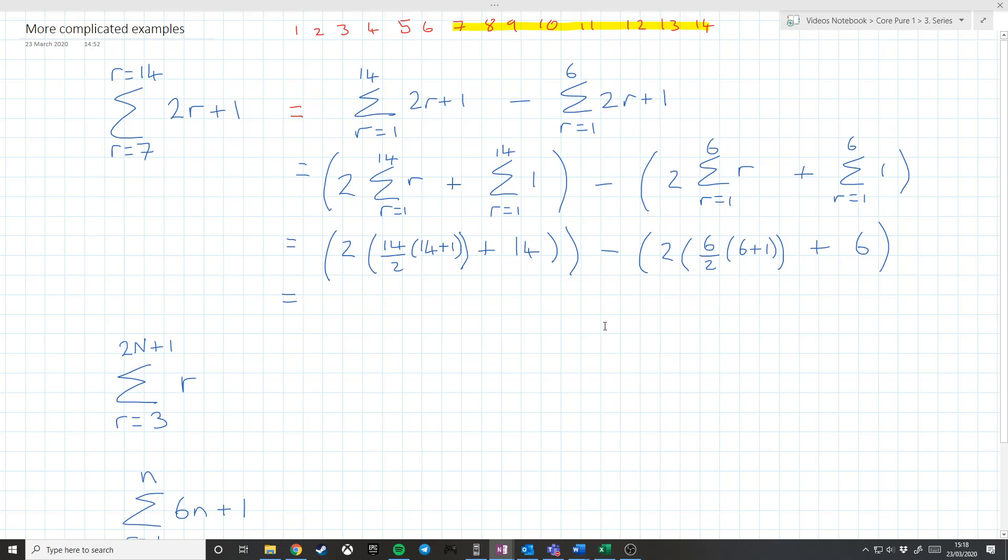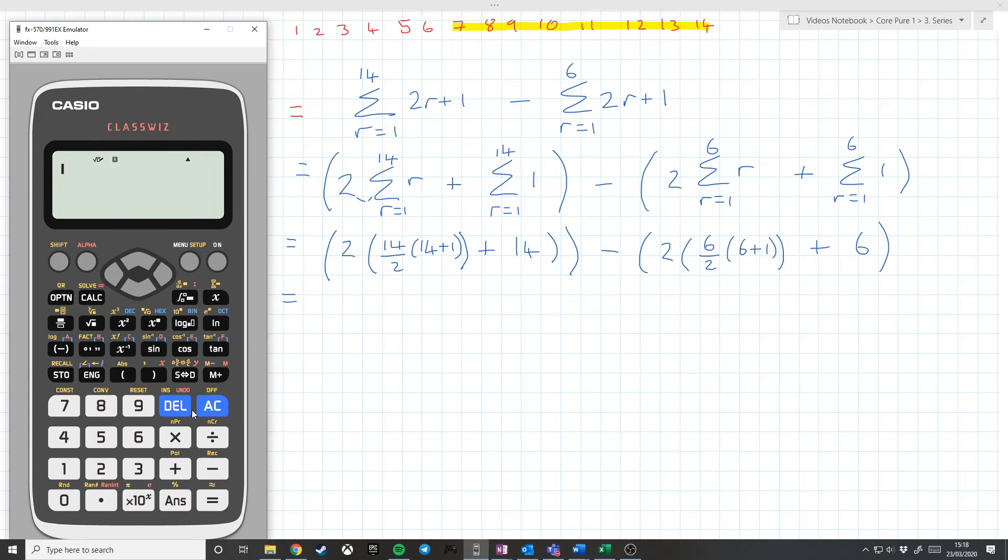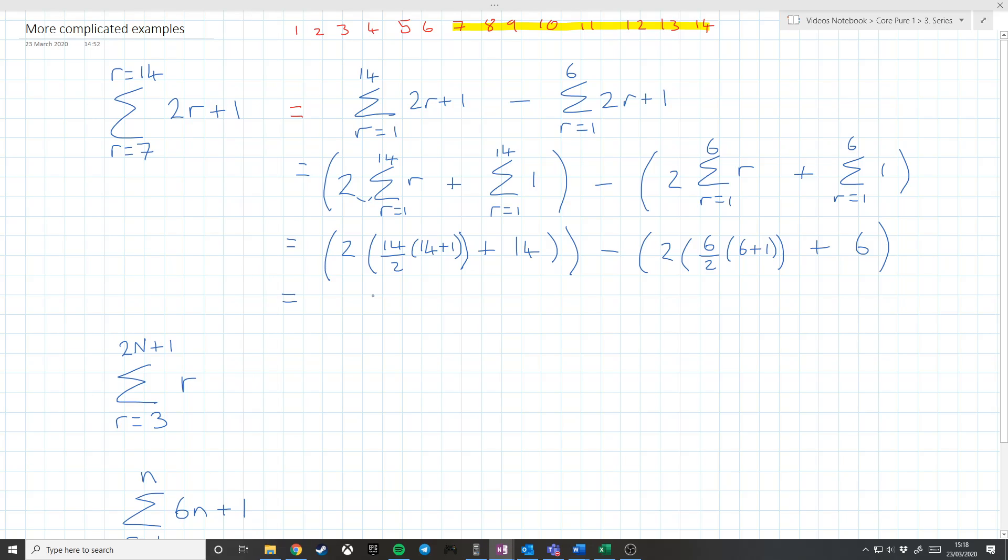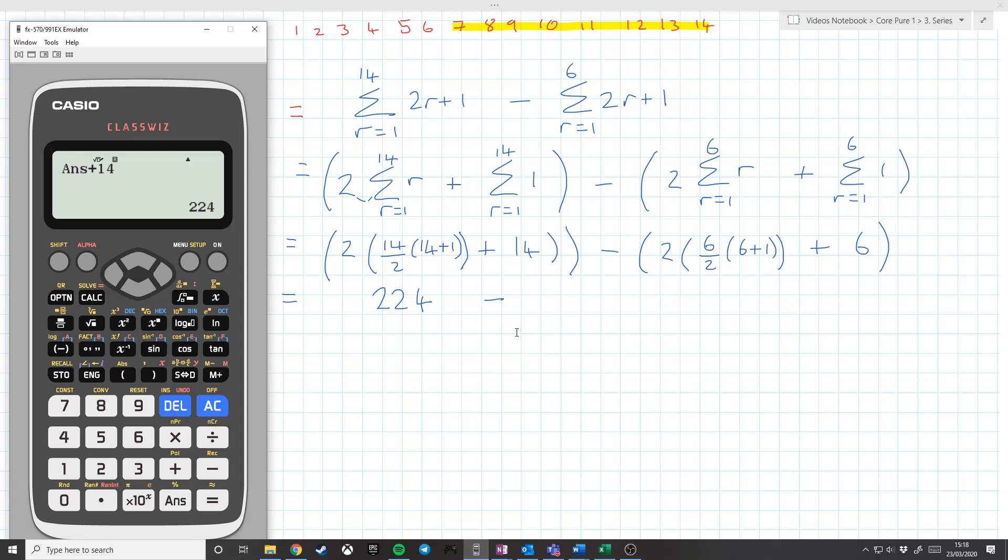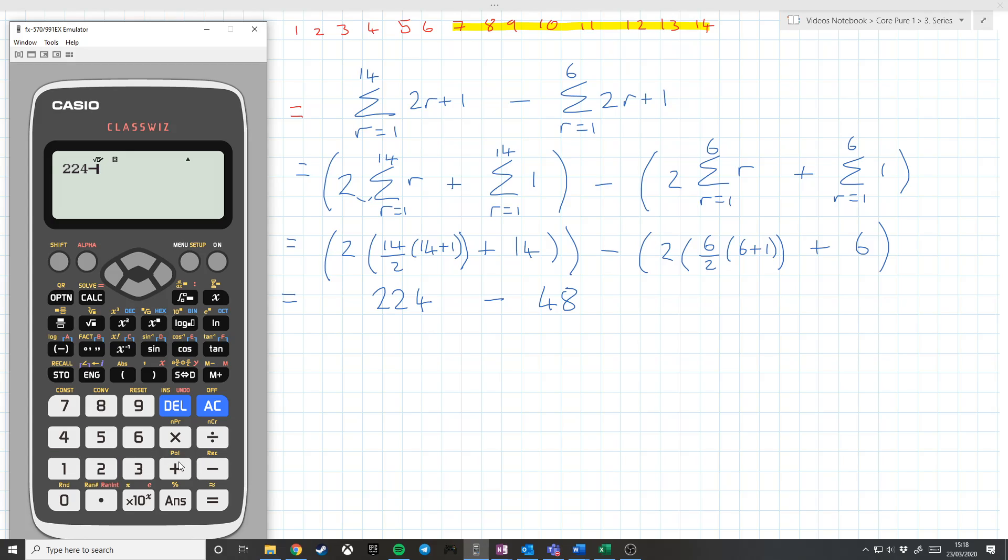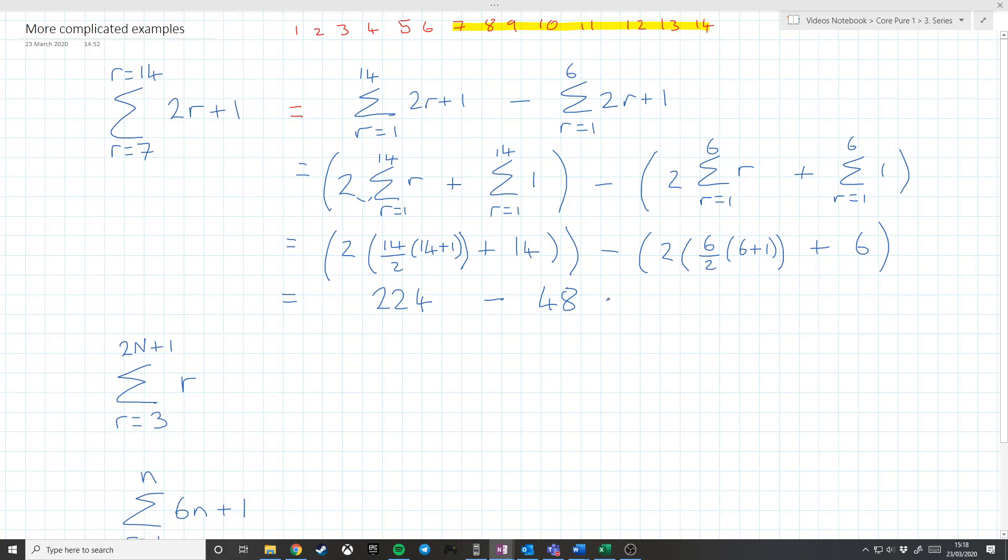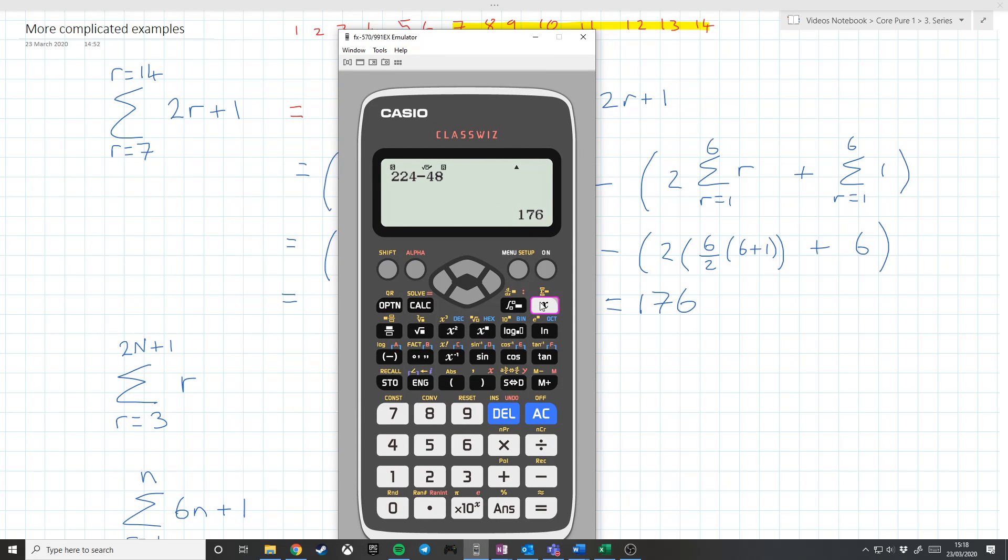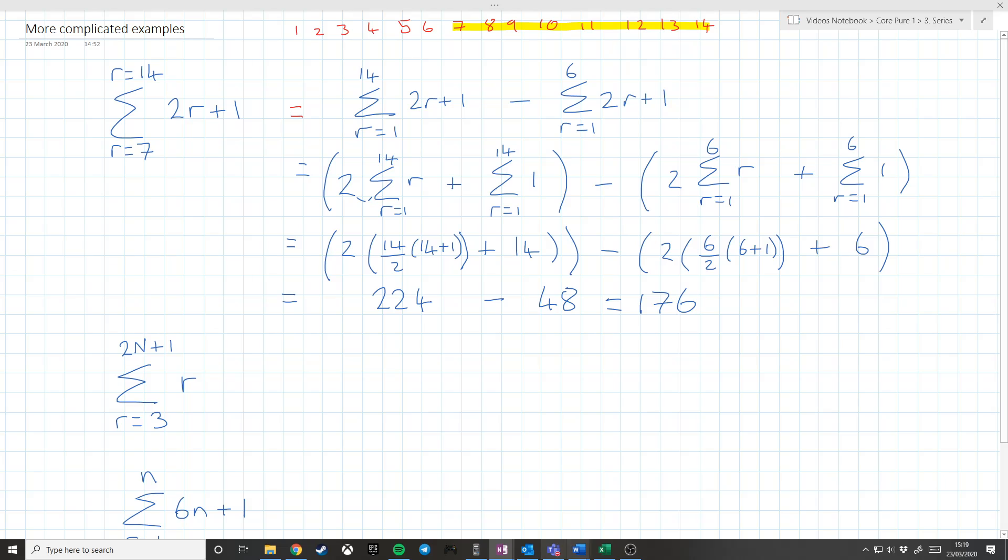And now we'll get the calculator. 14 times 15, let's do this. Mental arithmetic when I'm making videos is much harder, believe me. So 14 times 15 plus 14, so this is 224 minus, and this one, we have got 6 times 7 plus 6, 48. And then 224 minus 48, 176. And I can always check my answer to these questions because I can just put the original thing in. Shift, there, so shift and then that button there. So we're going to do 2x plus 1 from 7 to 14. Phew. And I got the answer right.